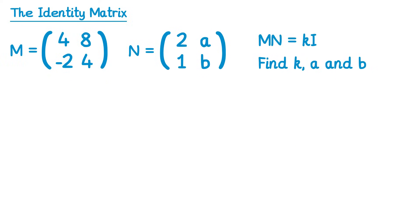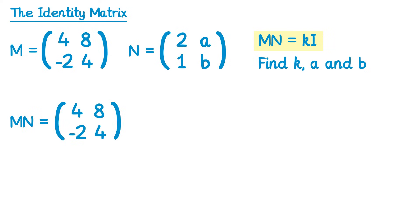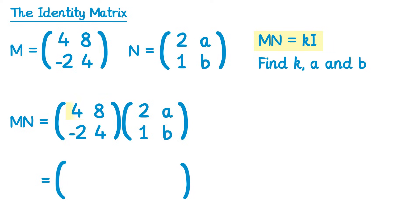Now let's look at an exam question using the identity matrix. We're given two matrices M and N, and told that M times N equals k times I. We need to find k, a, and b. So let's work out MN. Starting with the top left element: four, eight with two, one — four times two is eight, eight times one is eight, so eight plus eight makes sixteen.